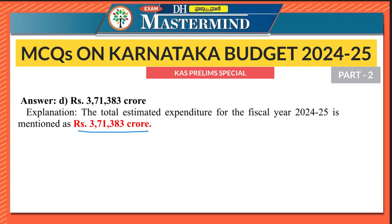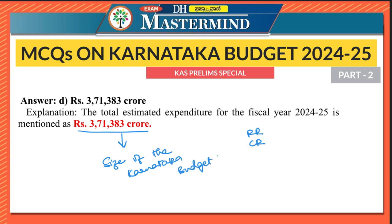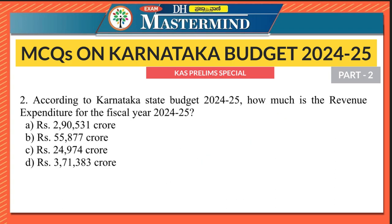Please write what is the total revenue receipts and capital receipts in the comment section. Note that 371,383 crore is the actual size of the Karnataka Budget 2024-2025. This particular question about the size of the Karnataka Budget was asked in the last prelims, so this figure is very important — please note it down.